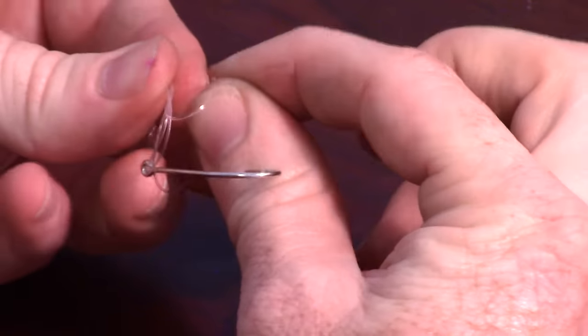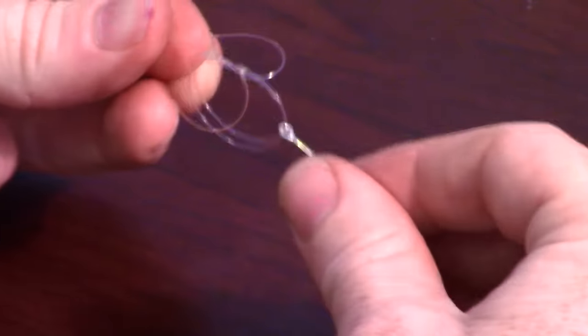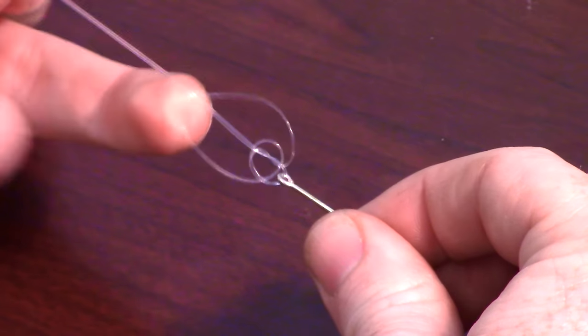Stick the tag end loop over the hook. Keep the loop over the knot while cinching down.